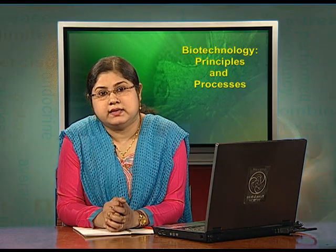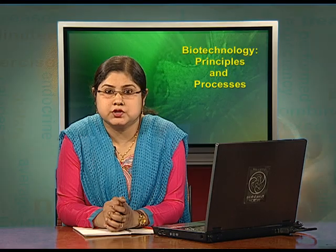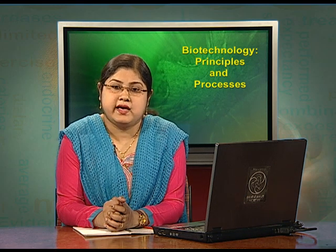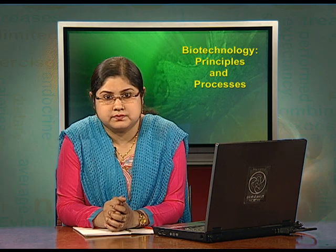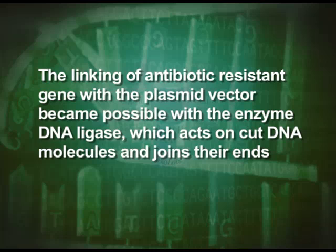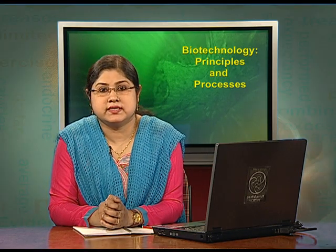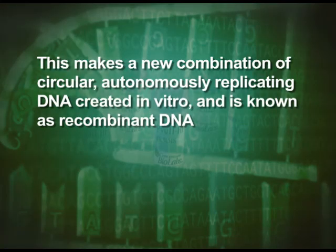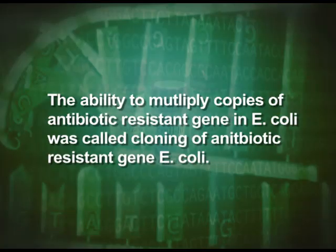Just as a mosquito acts as an insect vector to transfer the malaria parasite into the human body, a plasmid can be used as a vector to deliver an alien piece of DNA into the host organism. The linking of antibiotic resistant gene with the plasmid vector became possible with the enzyme DNA ligase, which acts on cut DNA molecules and joins their ends. This makes a new combination of circular autonomously replicating DNA created in vitro, known as recombinant DNA. When this DNA is transferred into Escherichia coli, a bacterium closely related to Salmonella, it could replicate using the new host DNA polymerase enzyme and make multiple copies. The ability to multiply copies of antibiotic resistant gene in Escherichia coli was called cloning of antibiotic resistant gene in Escherichia coli.